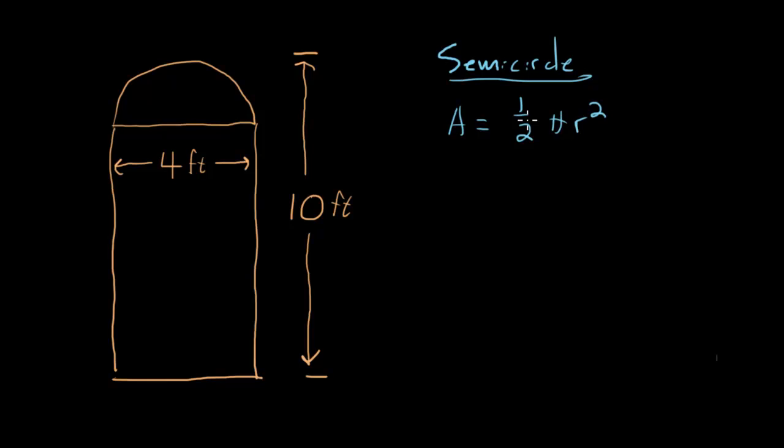So as soon as we find r, we can just plug into our formula to get the area of the top. So what is r? Well, we're told that the window is four feet all the way across. So we know the diameter of this circle is four.